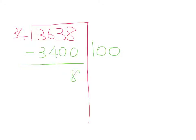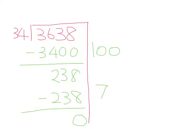Now I have 238 left. I know that 7 times 34 is 238, so I'm going to put 7 there and 238 there. Now I have to get the final answer. I'm going to add these up. The answer is 107.